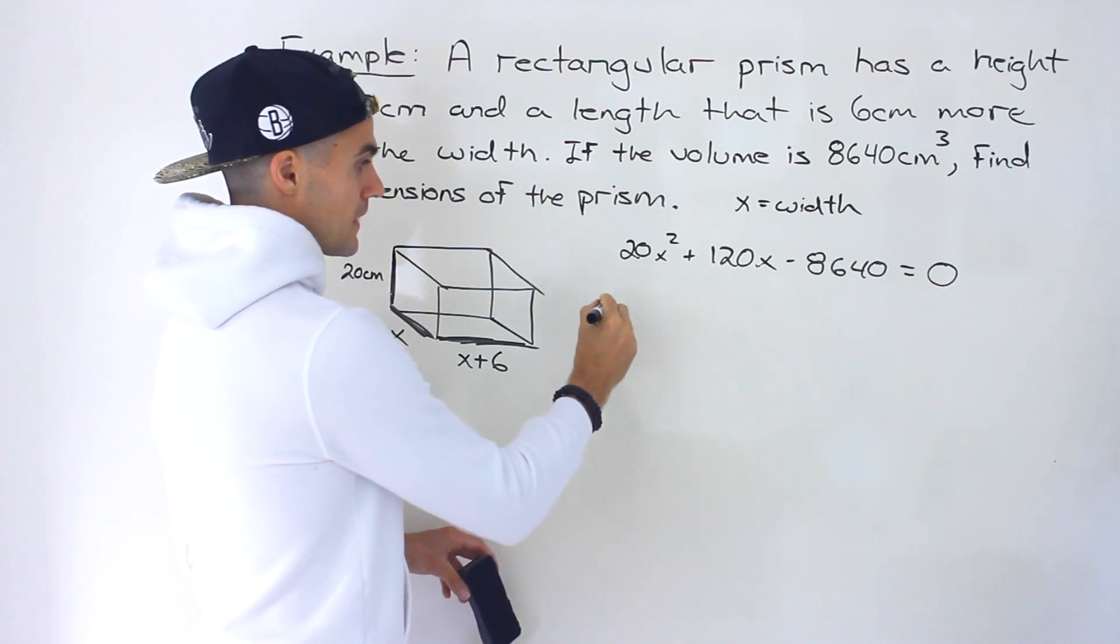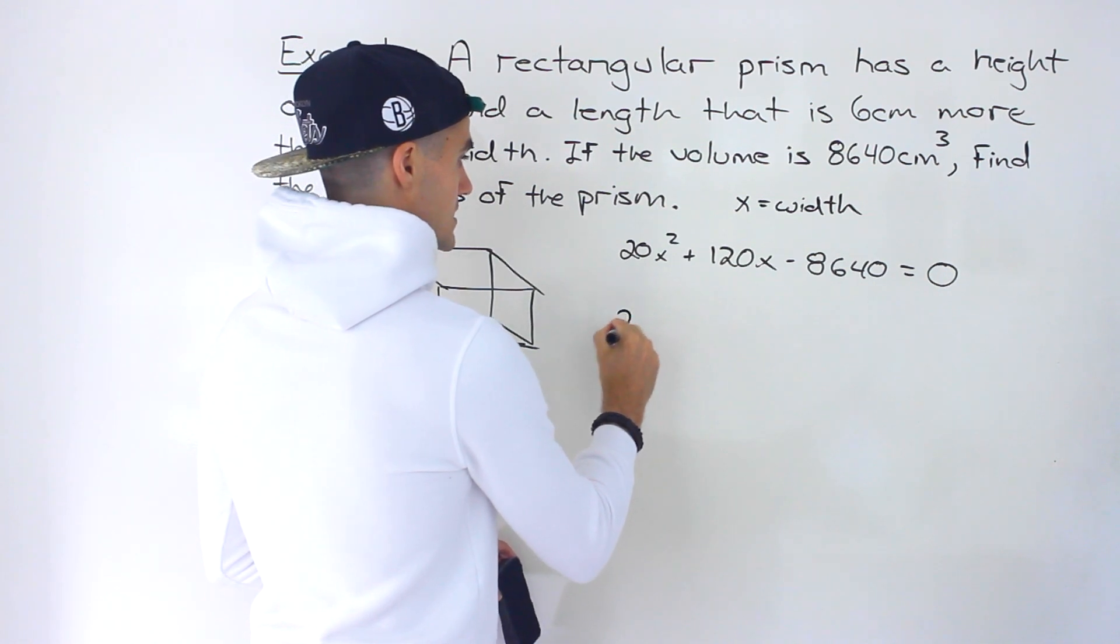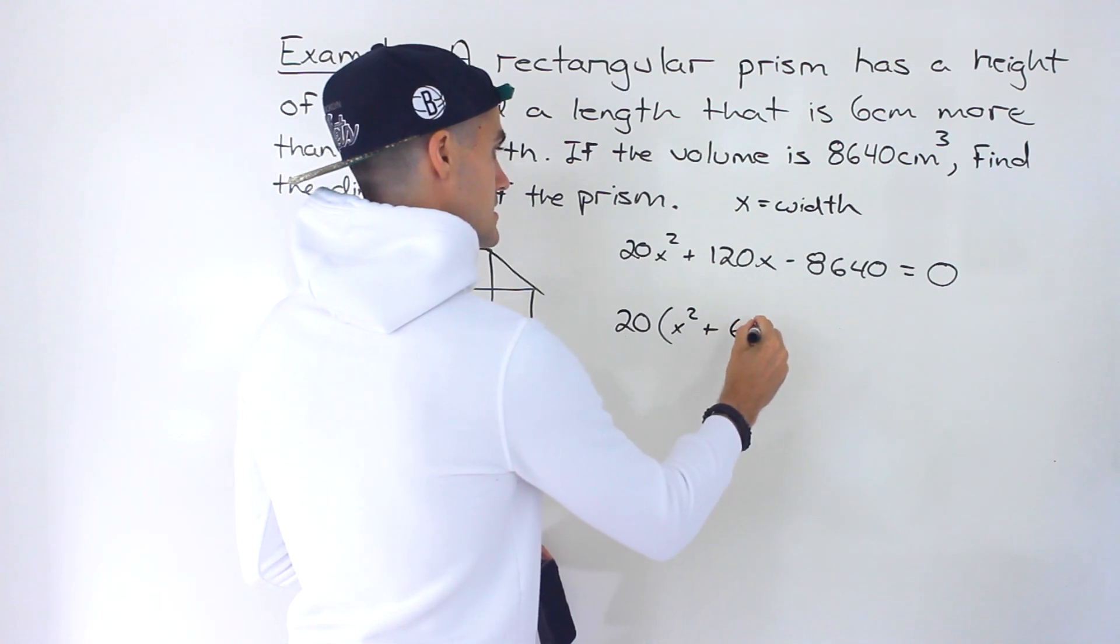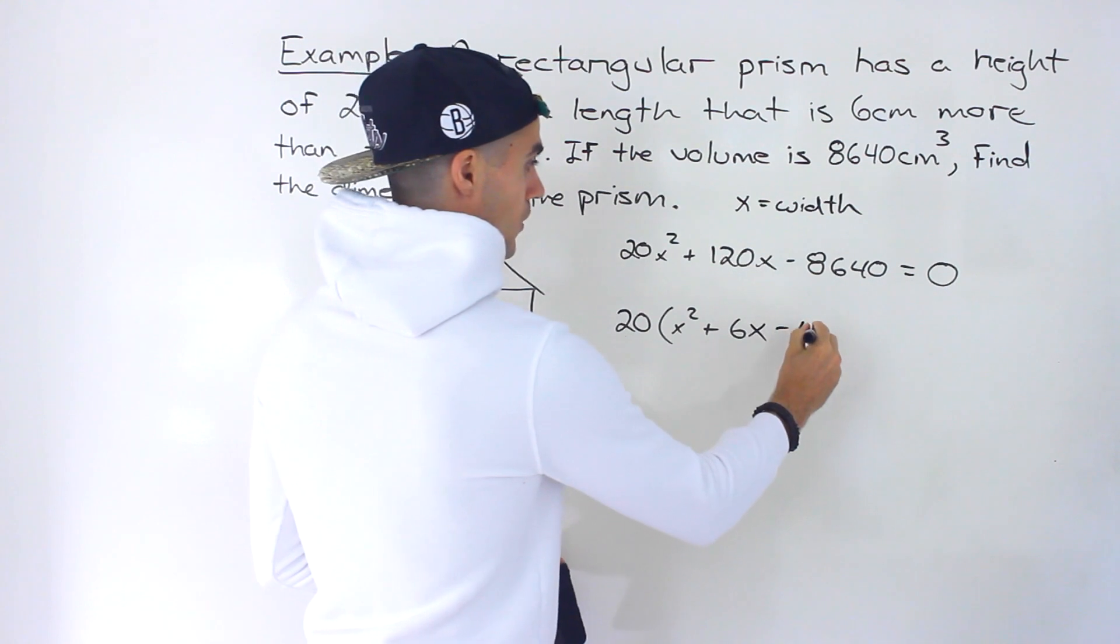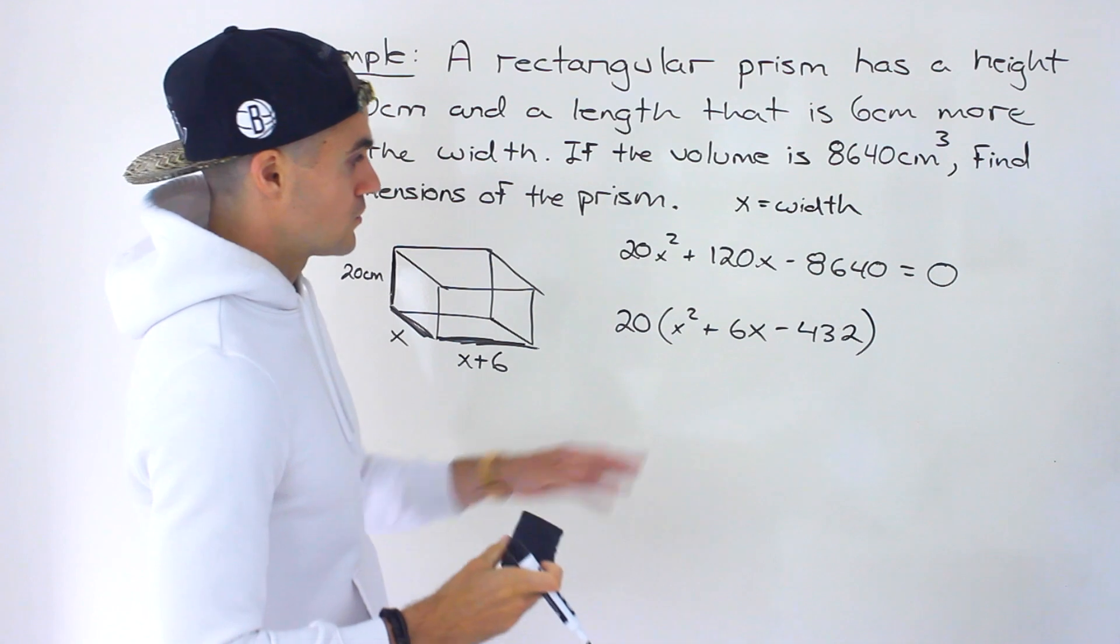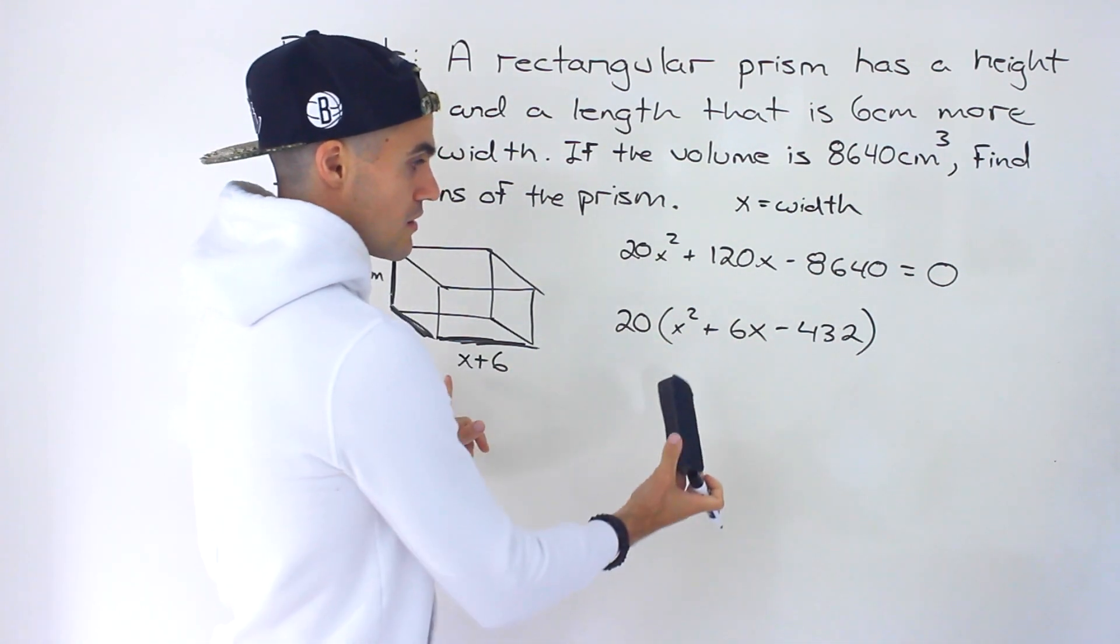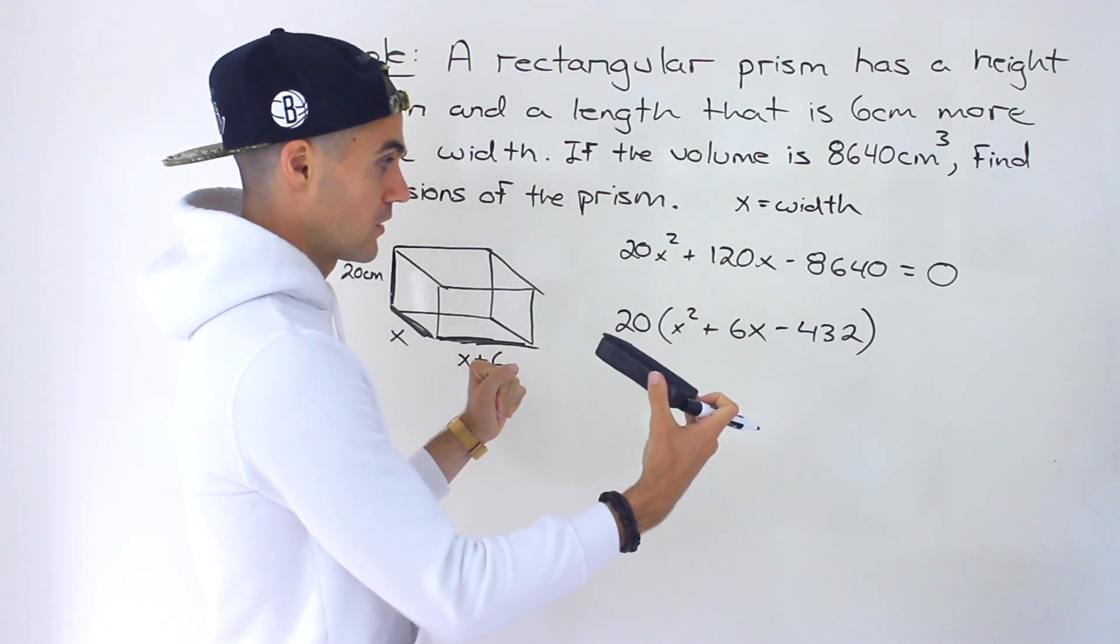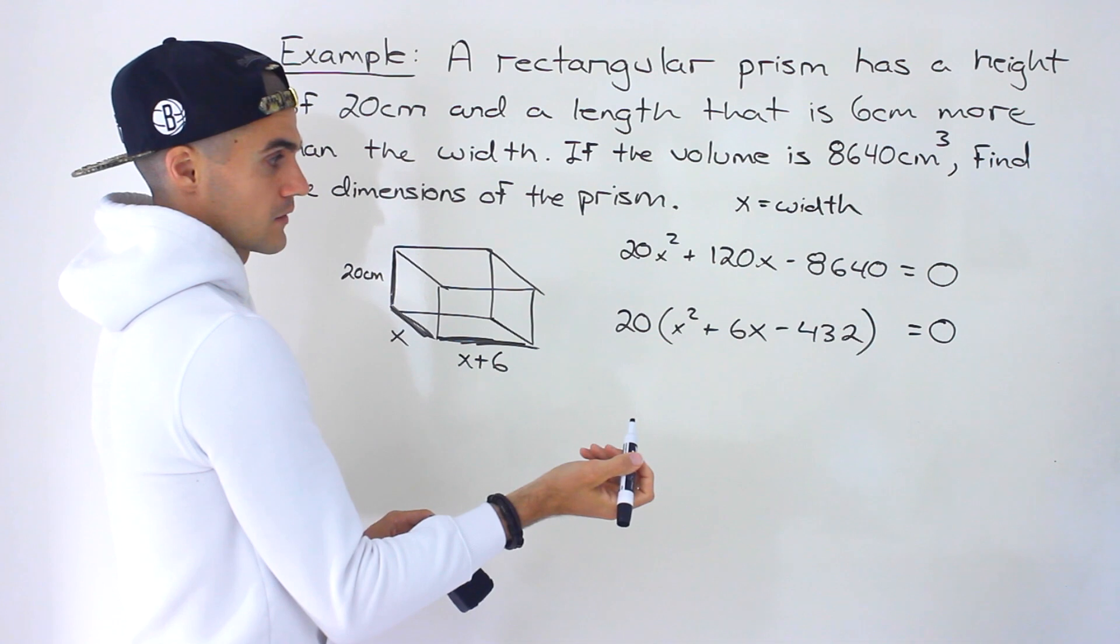The first thing we can do is from this quadratic, notice we could take out a 20 from everything. If we do, we'd end up with x squared plus 6x minus 8640 divided by 20 would give us 432. This is the quadratic here that you would get if you took that route of dividing both sides by 20 at that point before.